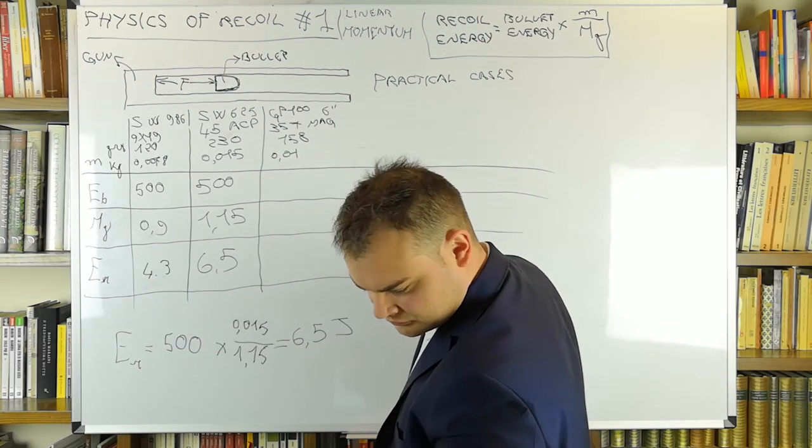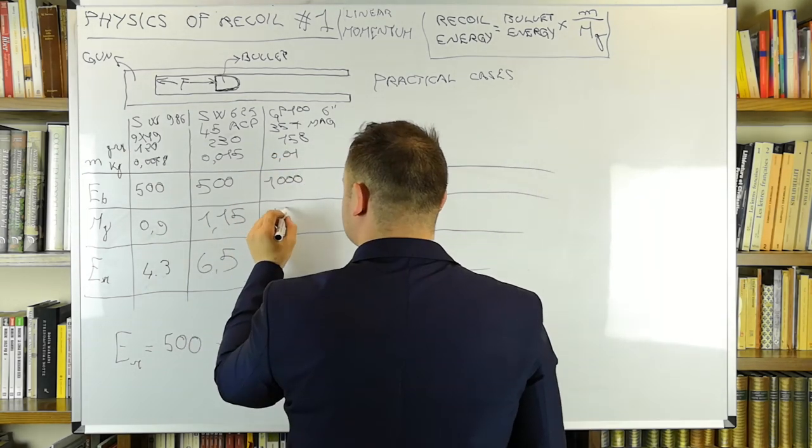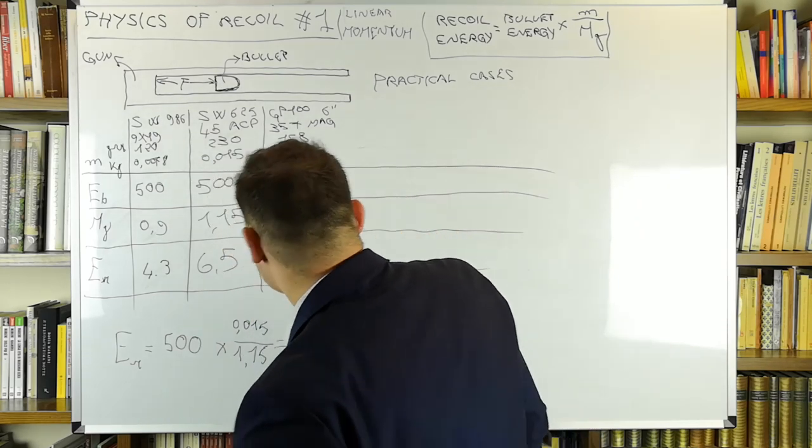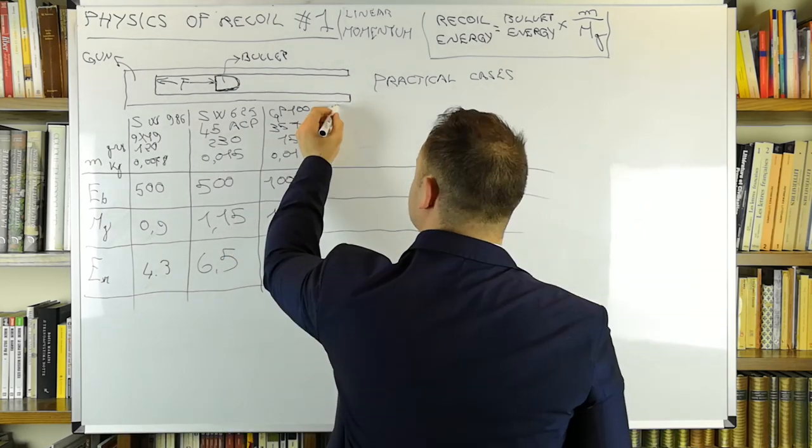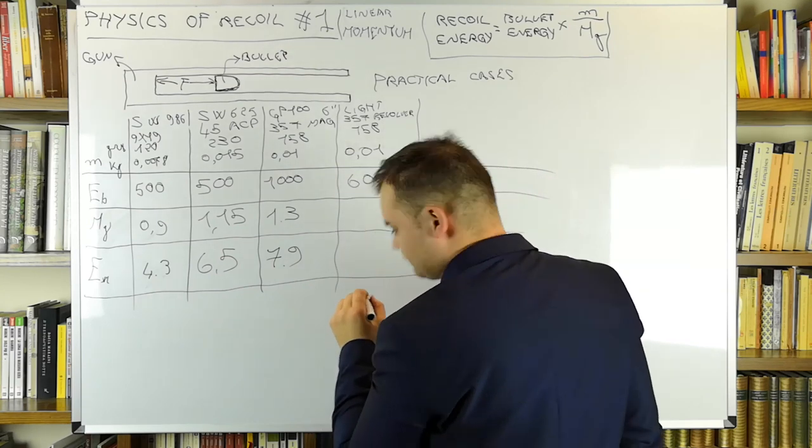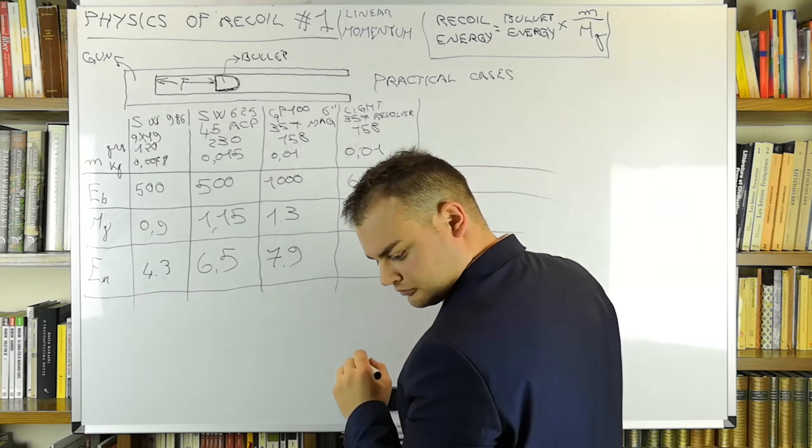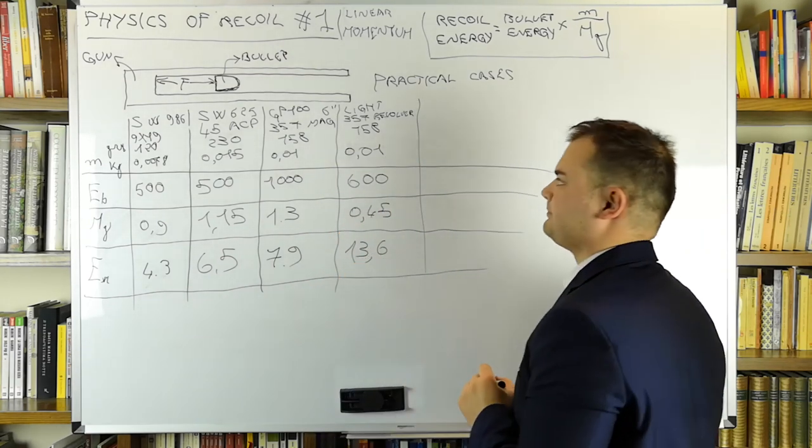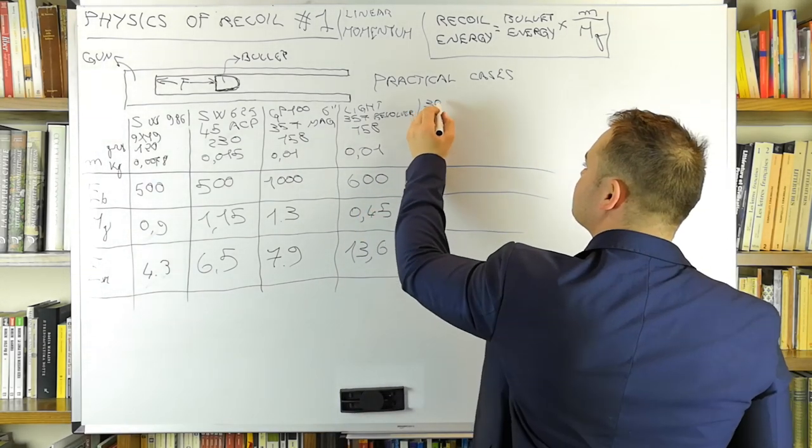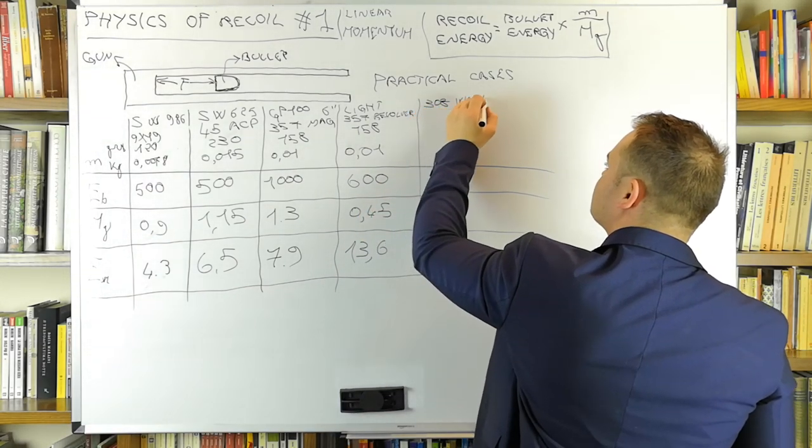Now, for a full-size .357 revolver, we get a recoil energy of 7.9 joules. What if we shoot the same cartridge out of one of those very lightweight snubby revolvers? Of course, the energy of the bullet is reduced by the short length of the barrel to 600 joules. Still, we get a much higher recoil energy than the full-size revolver at 13.6 joules.